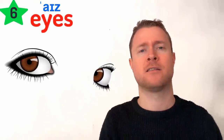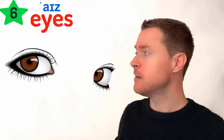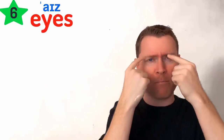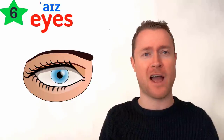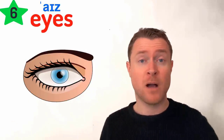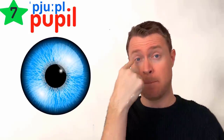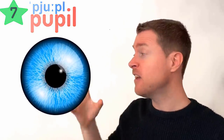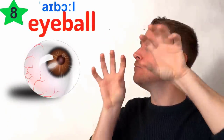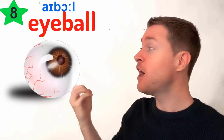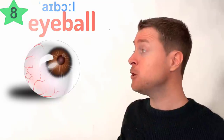Next up, we have your eyes. One eye, two eyes. The eye describes all of this — everything that moves when you look around is your eye. Your eyes are also made up of different parts. The little dot in the middle of your eyes is called the pupil, and you have two: pupils. The actual eye that moves around is called your eyeball. Eyeball — the eyeballs move around.